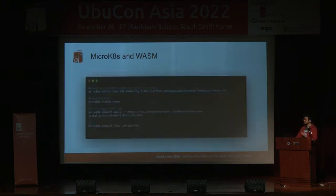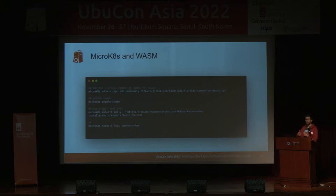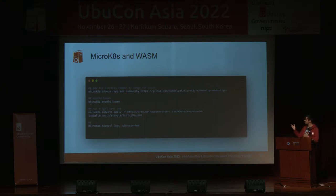I'll recommend checking out the k-wasm project. Here are the steps. The first thing is we're adding the MicroKubernetes community add-on for k-wasm. MicroKubernetes allows you to add community-based add-ons to the entire MicroKubernetes ecosystem. The one we're focusing on is k-wasm, which handles the cloud-native WebAssembly aspect. Then if we run this specific last command — let me copy this over — I'll go back to my root folder. I've already installed the k-wasm installer, so I'll navigate there.